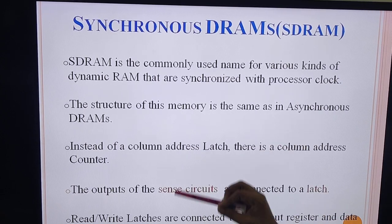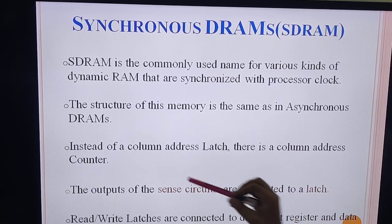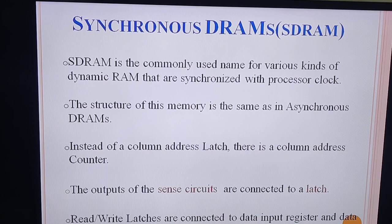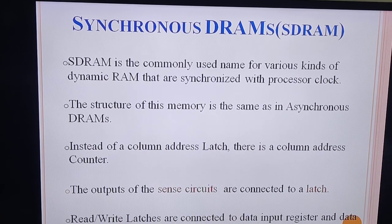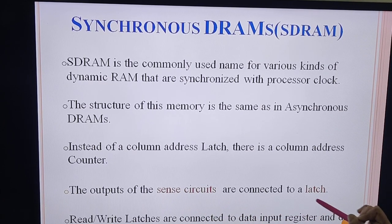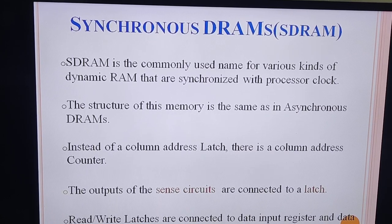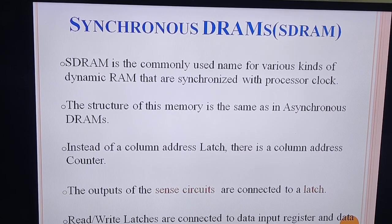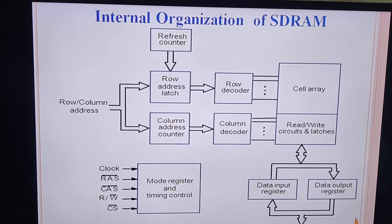There are a few key circuit differences. Instead of the column address latch that you had in an asynchronous DRAM, here you have a column address counter. Similarly, the output of the sense circuit is connected to a latch, and these latches are connected to two registers: a data input register and a data output register.